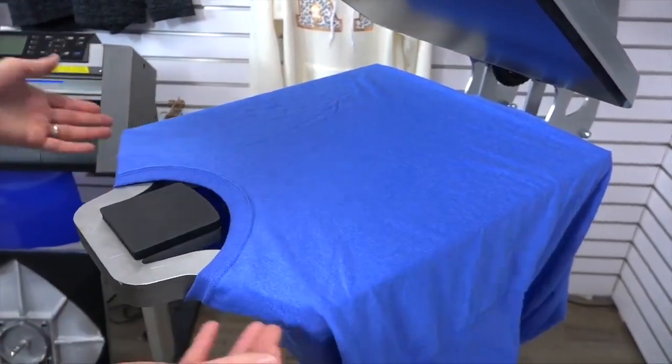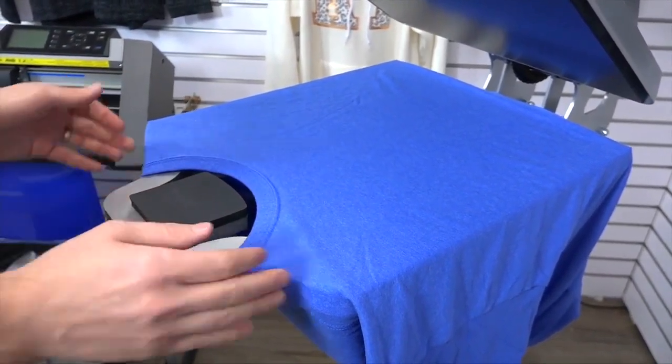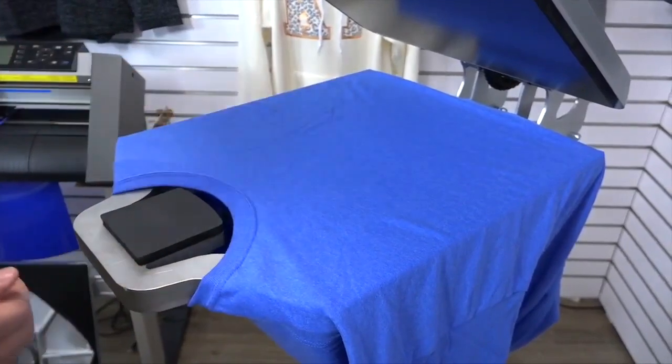So you can see on larger shirts it's very tough to load straight and so this part of the platen comes straight through the neck hole. You can make sure the shirt's straight and that is going to allow for accuracy of the front print area.